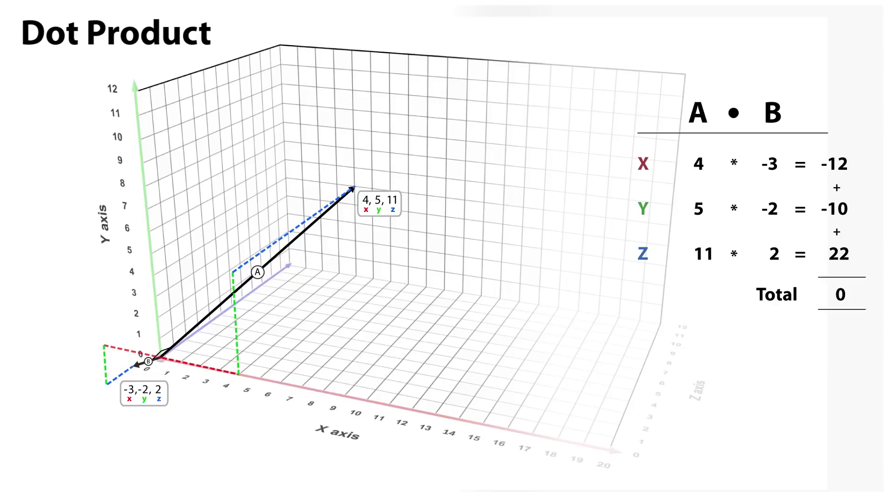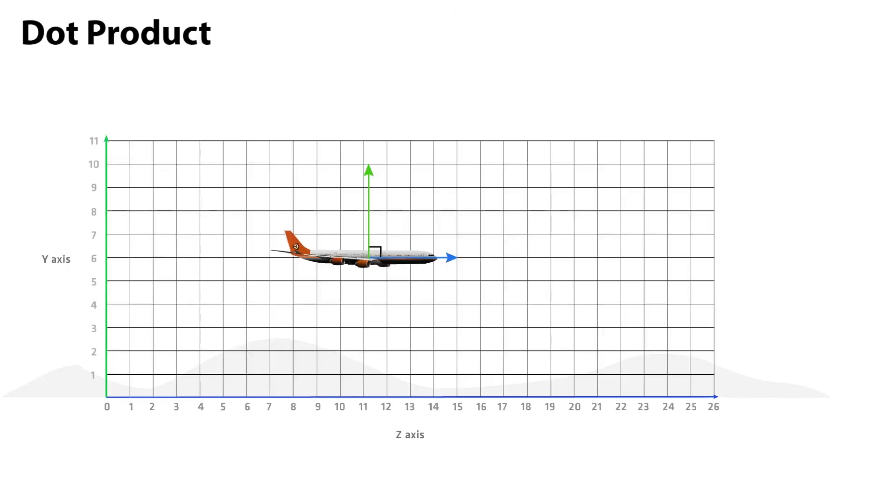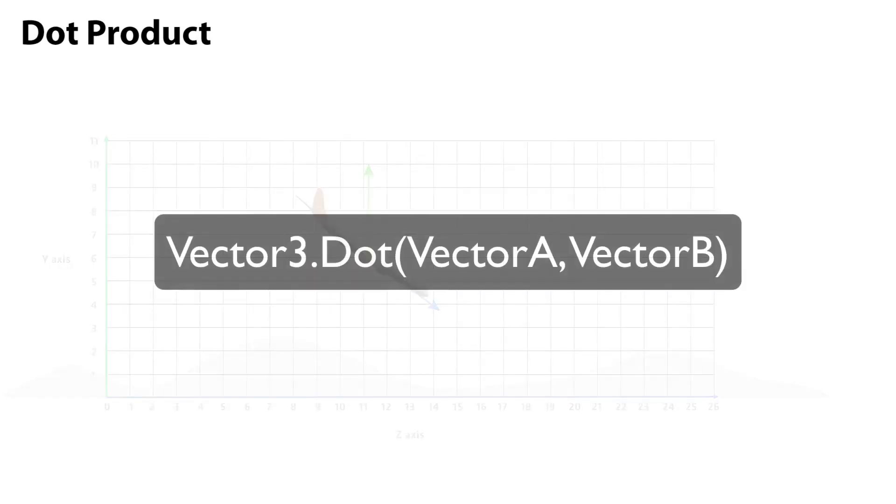An example of using the dot product could be when creating a flight simulator. You would check the world up vector with the forward vector of the plane. If the two were perpendicular, if the dot product equaled 0, then the plane should have the least amount of drag. As the dot product increases in a positive value, we would know that the plane is pulling up, and we could add more drag. If the dot product increases in negative values, we would know that the plane is in a dive. Unity has a helper function to perform dot product calculations easily. For details of this, see the documentation link below.